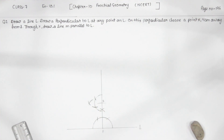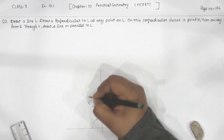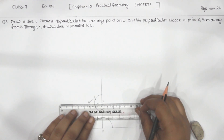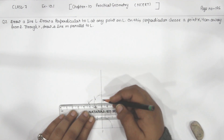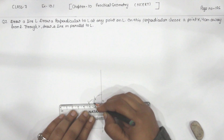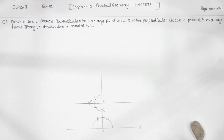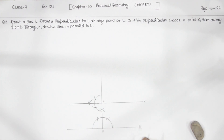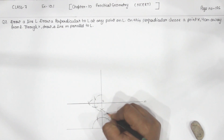So this is the perpendicular we have drawn. Now we are going to join the point to the point X. This is the point and this is the point X. We are going to join both of them. This is the line segment M which we have to draw parallel to L. So this is L and this is M — both of them are parallel to each other with a distance of 4 centimetres.